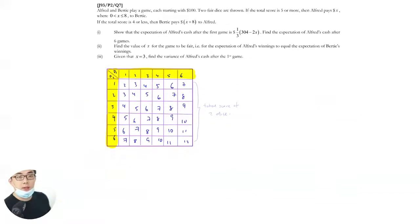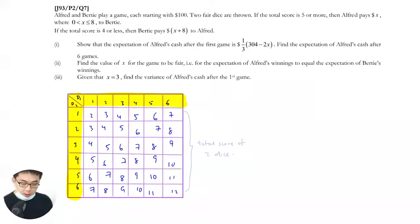So we're going to do this one here. Alfred pays X when total score is five or more. If the total score is four or less, Bertie pays Alfred. So basically now there are only two cases. Either Bertie pays Alfred or Alfred pays Bertie. Show that expectation of Alfred's cash after the first game is this one. Find expectation of Alfred's cash after six games.